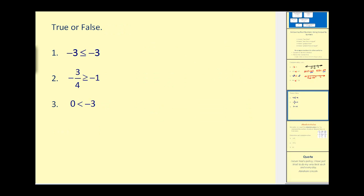And now we have true and false. Negative 3 is less than or equal to negative 3. This would be true because negative 3 is equal to negative 3, and equals is part of this inequality symbol. Therefore, this is true.